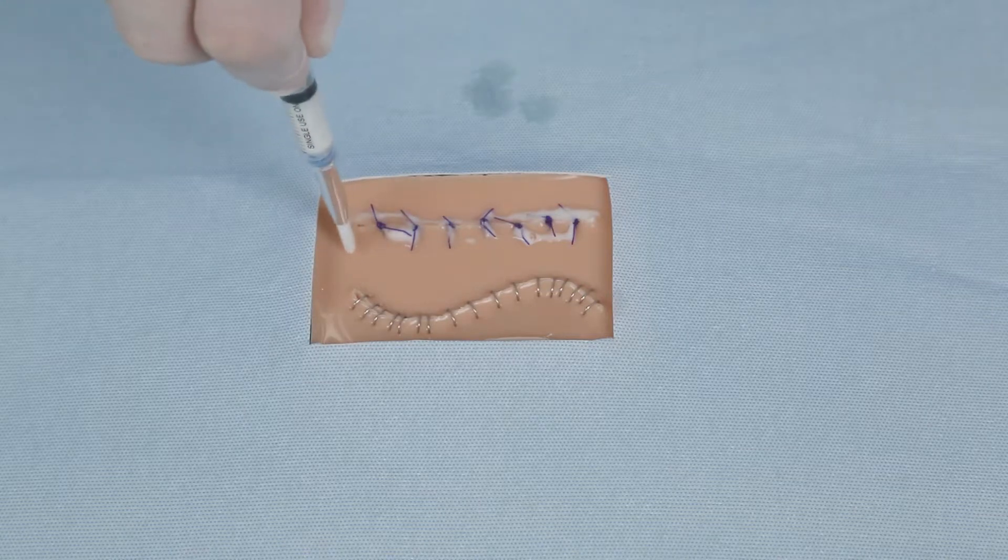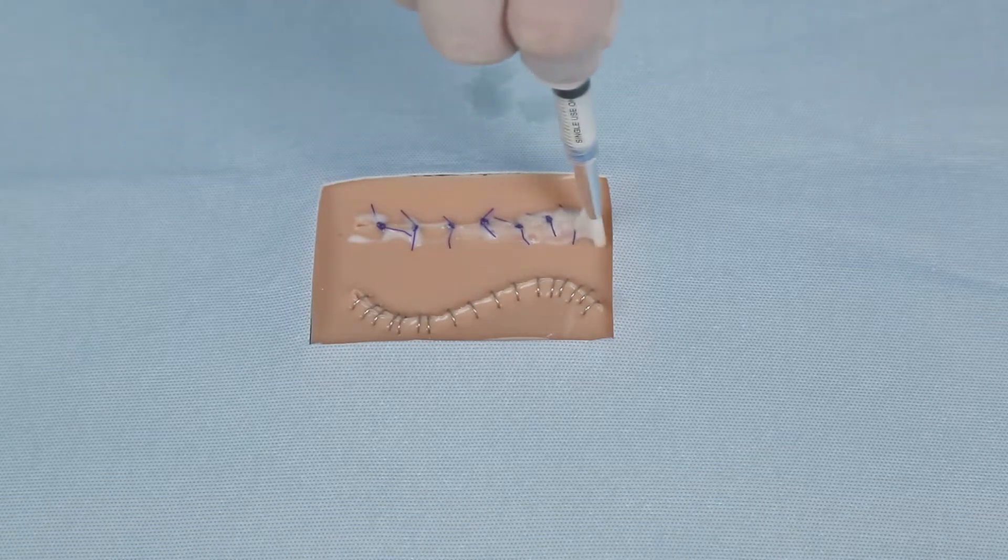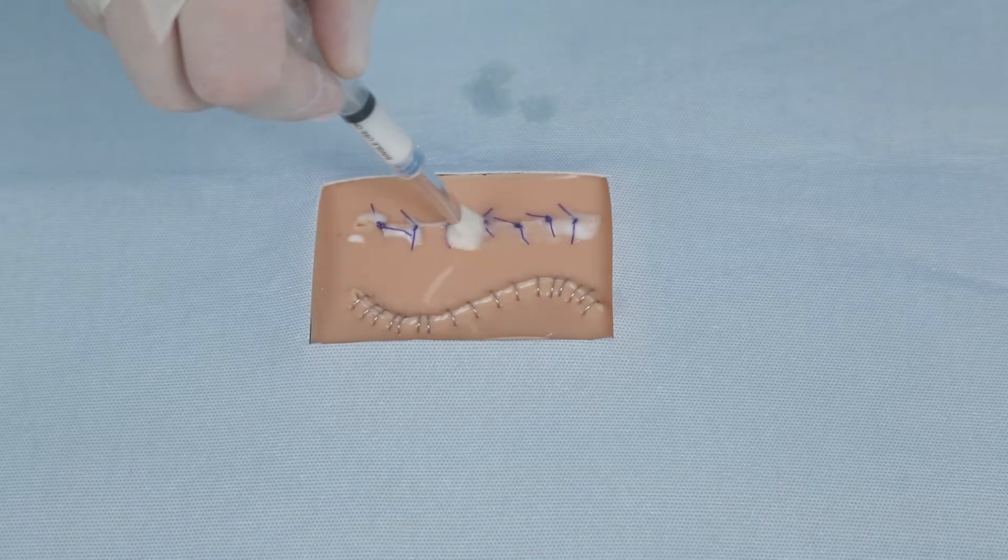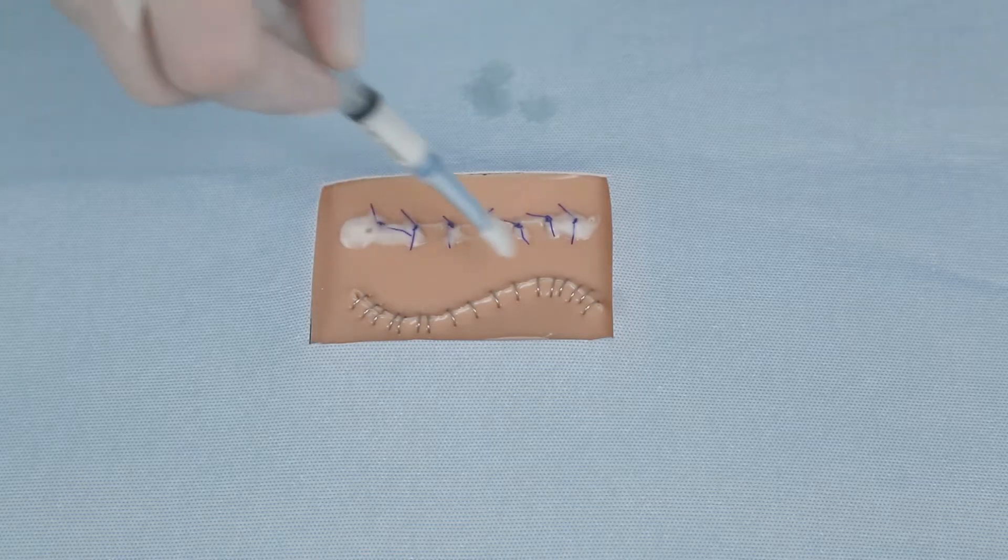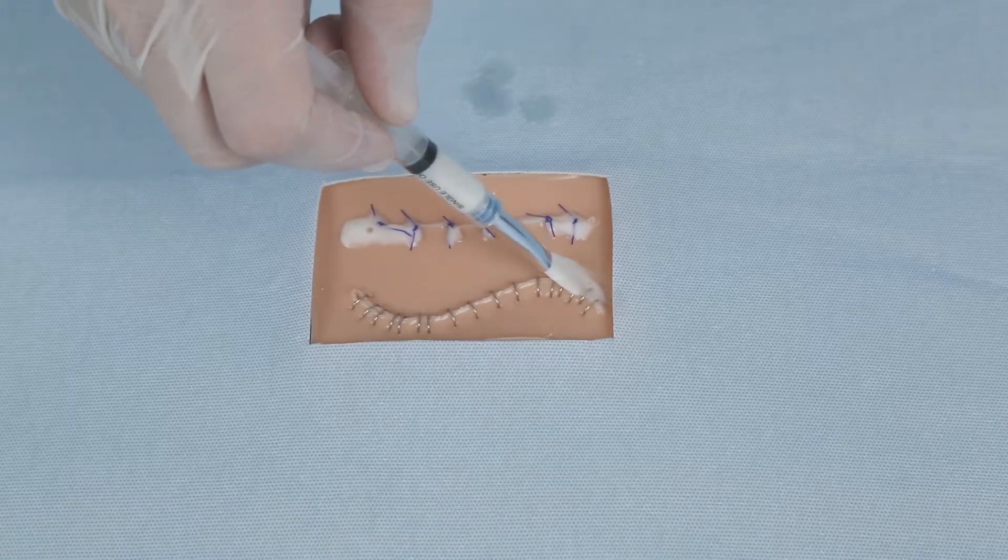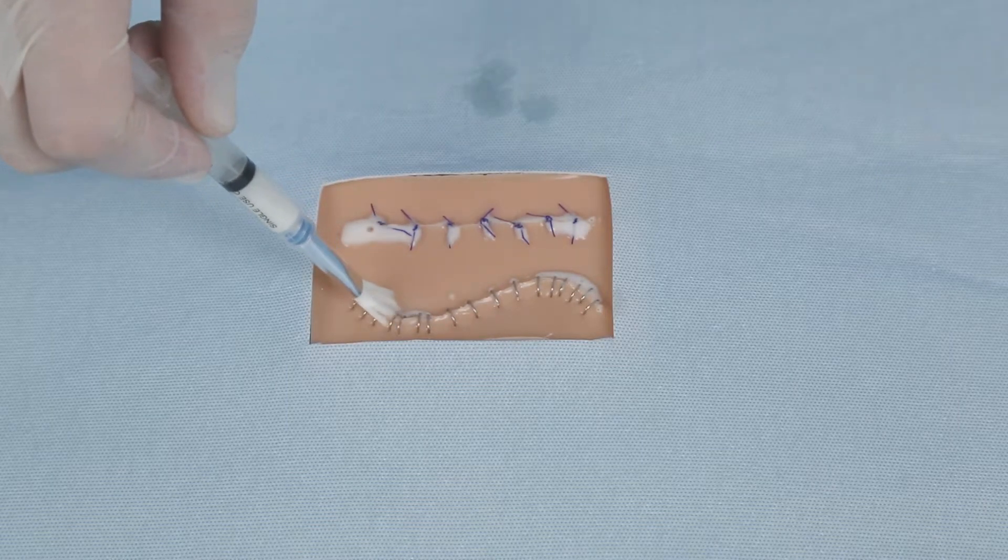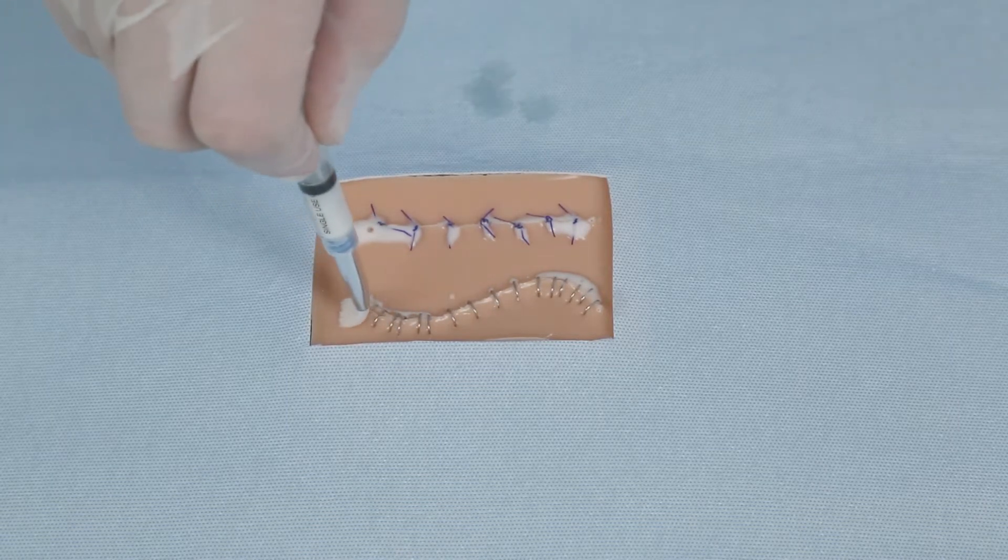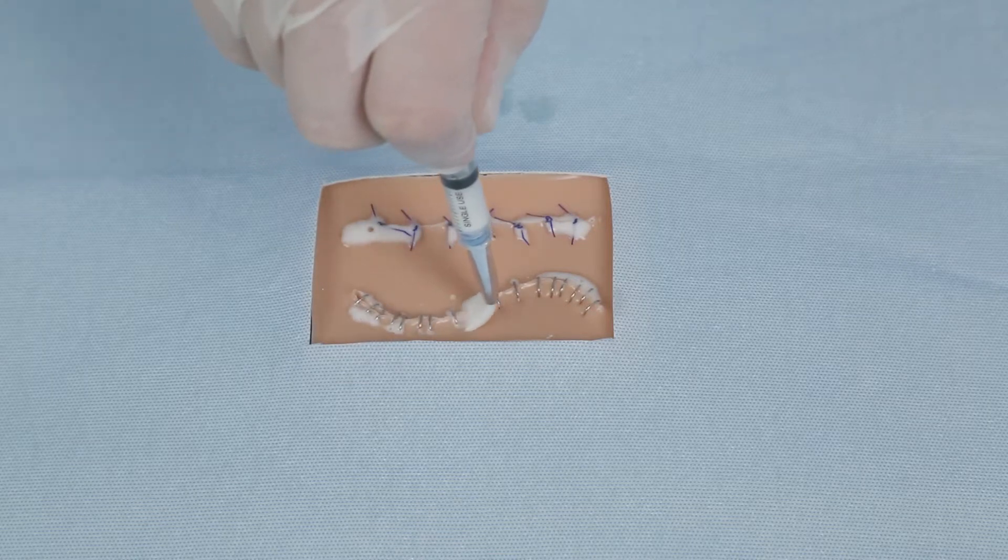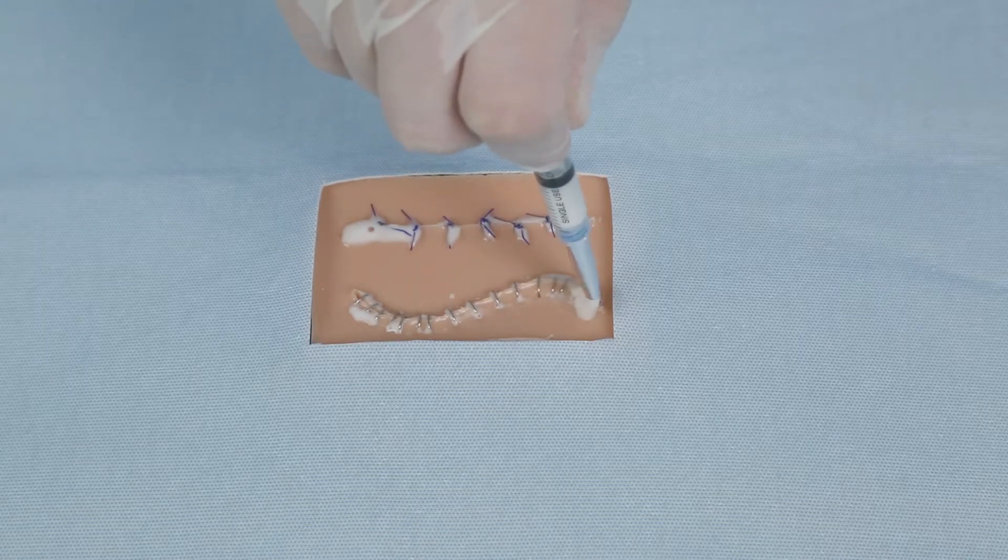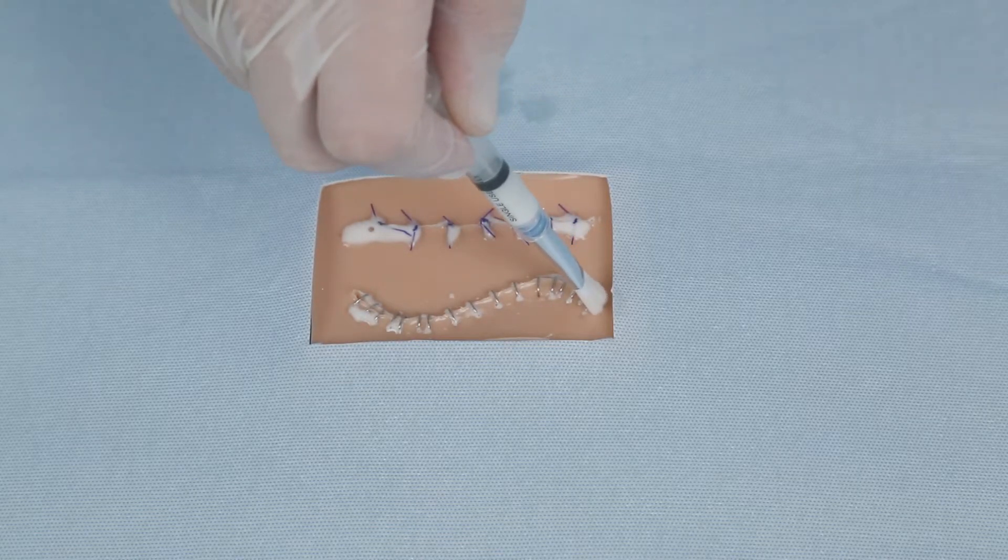Slowly push the syringe plunger until the Suture Seal polymer begins to dispense from the brush tip. Brush the Suture Seal polymer over the suture line or wound area in a thin even layer. Suture Seal is sometimes difficult to see because it is transparent or a milky white color. Runoff of excess liquid is expected. Within two minutes the Suture Seal polymer will become an adherent gel.